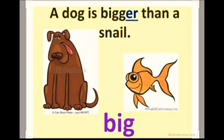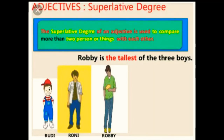A dog is bigger than a snail. Next, superlative degree. Superlative degree of an adjective is used to compare more than two persons or things with each other.